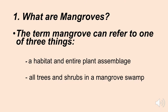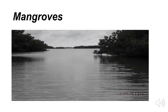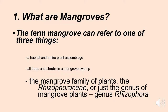The term mangrove can refer to one of several things. It can refer to a habitat and an entire plant assemblage — all trees and shrubs in a mangrove swamp. Mangroves can also refer to the mangrove family of plants, the Rhizophoraceae, or just the genus of mangrove plants, the genus Rhizophora.